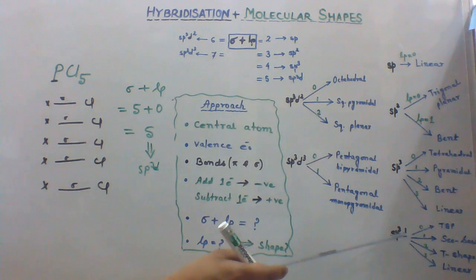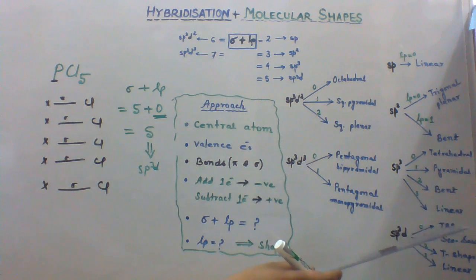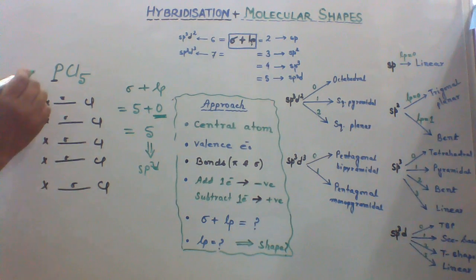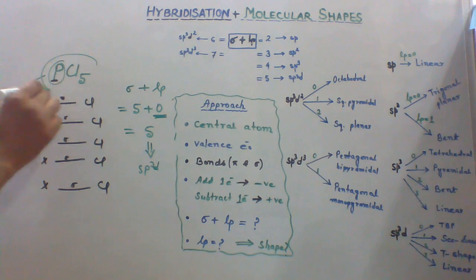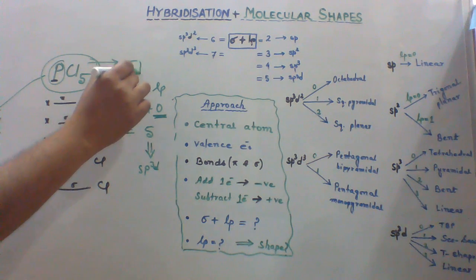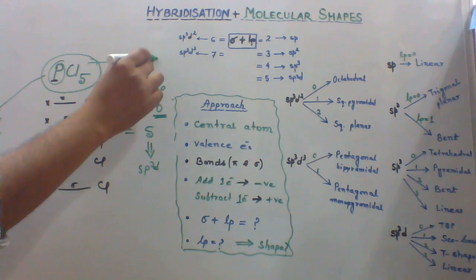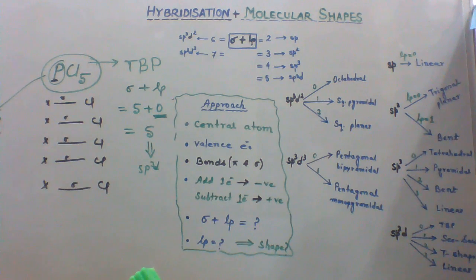Sp3d hybridization with 0 lone pair has trigonal bipyramidal shape. So phosphorus has hybridization sp3d and the molecular shape of PCl5 is trigonal bipyramidal. Let's draw the structure of trigonal bipyramidal geometry.